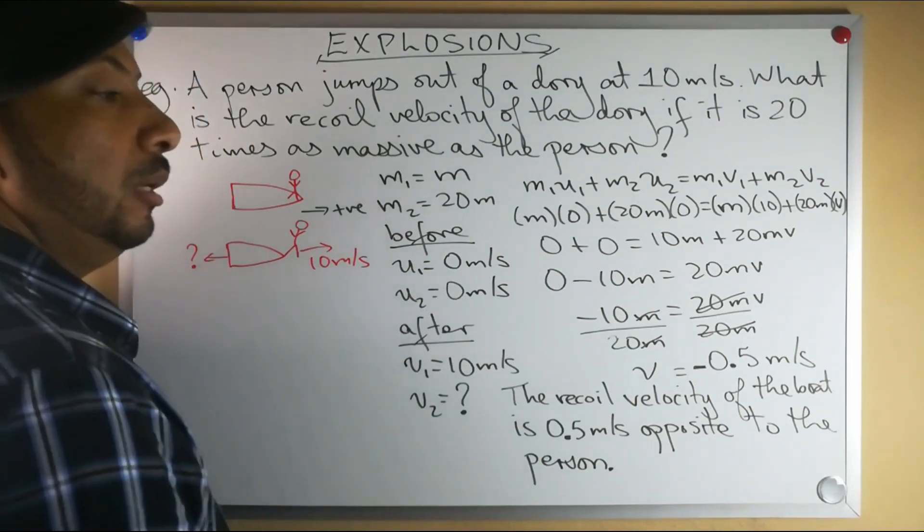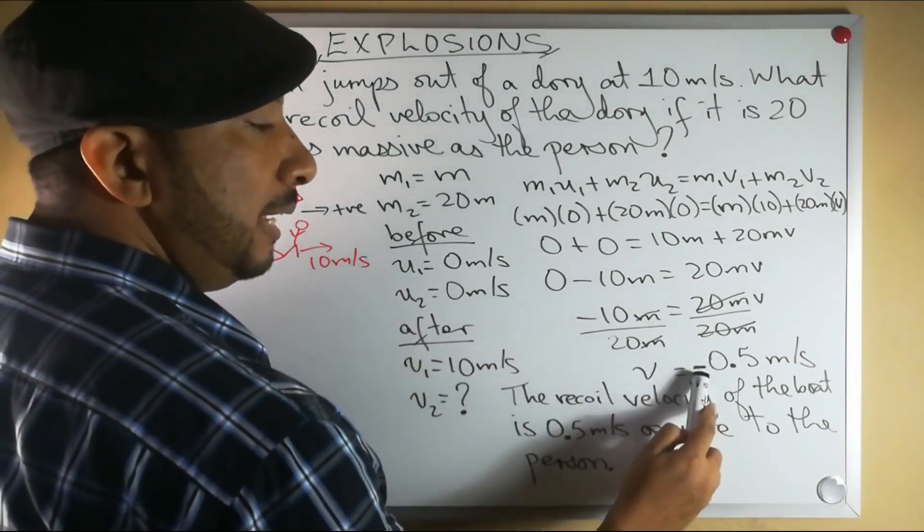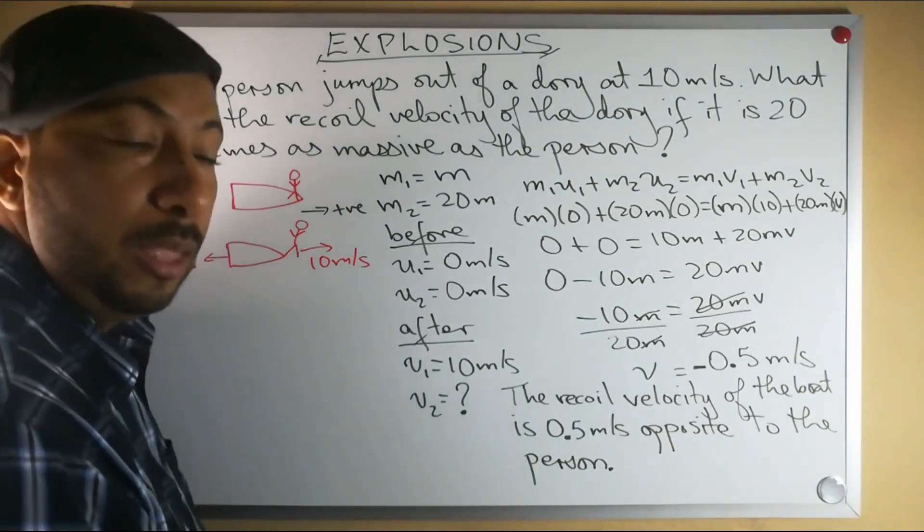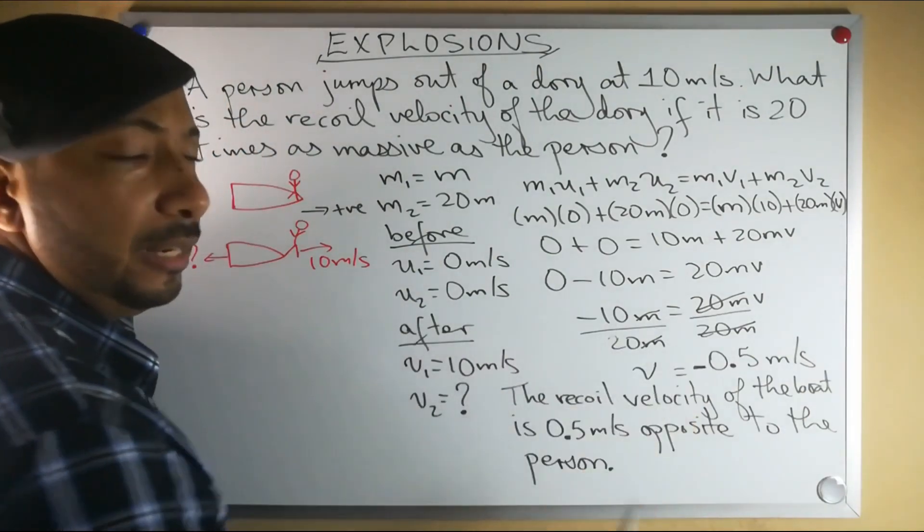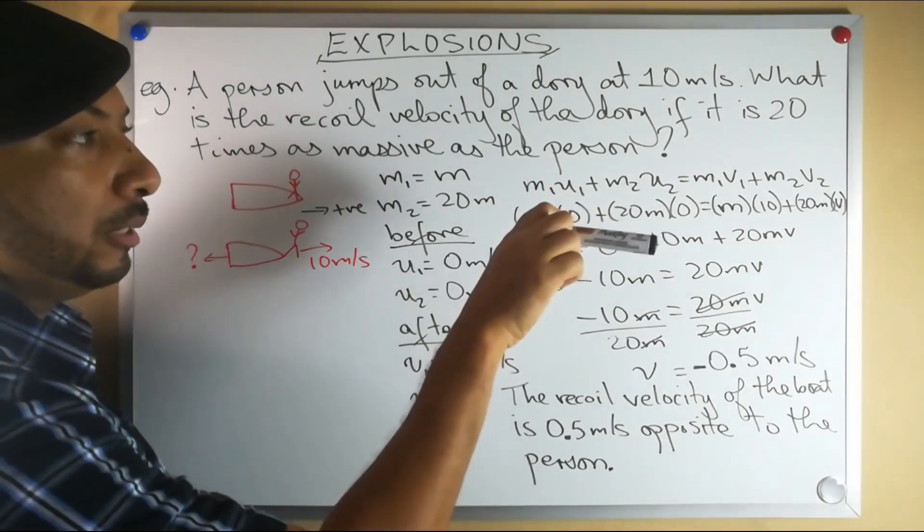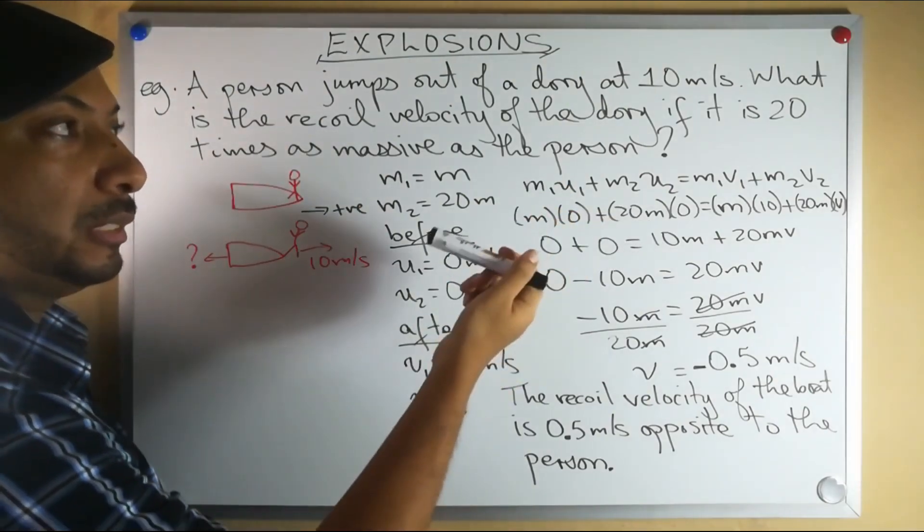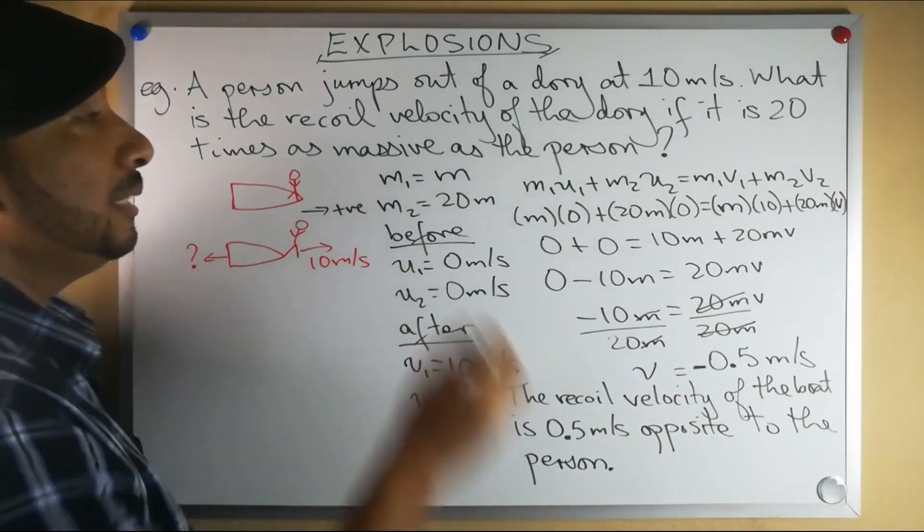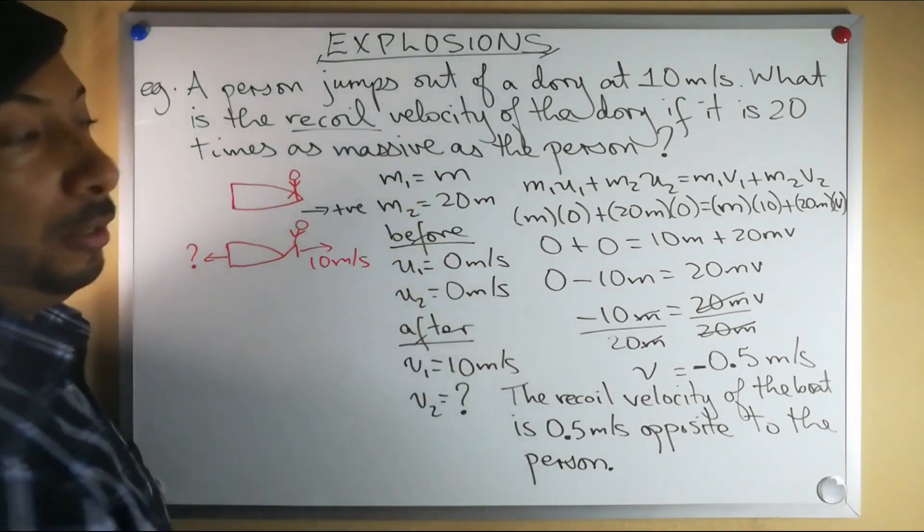Notice here that we got negative. So that means that the boat does not go forward like the person does. The boat goes in the opposite direction. And actually that's what the word recoil velocity means.